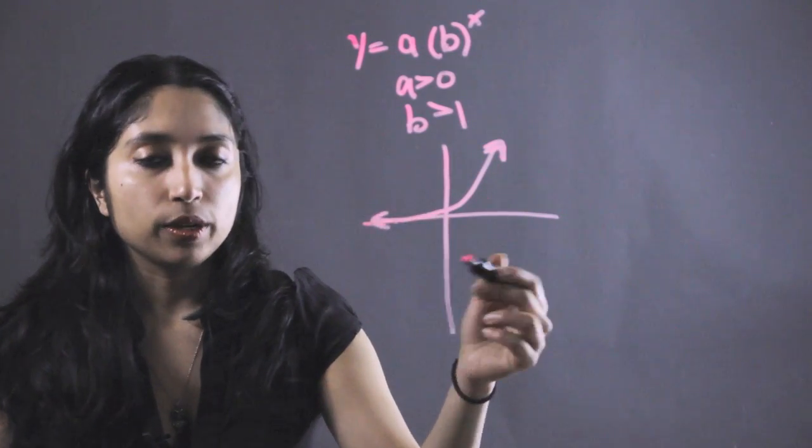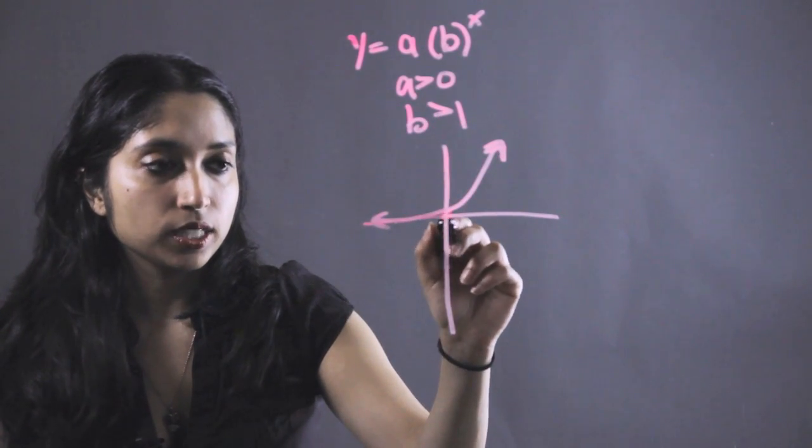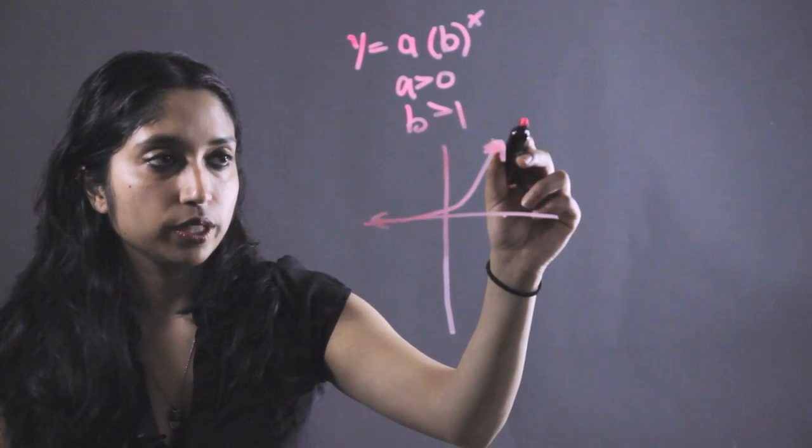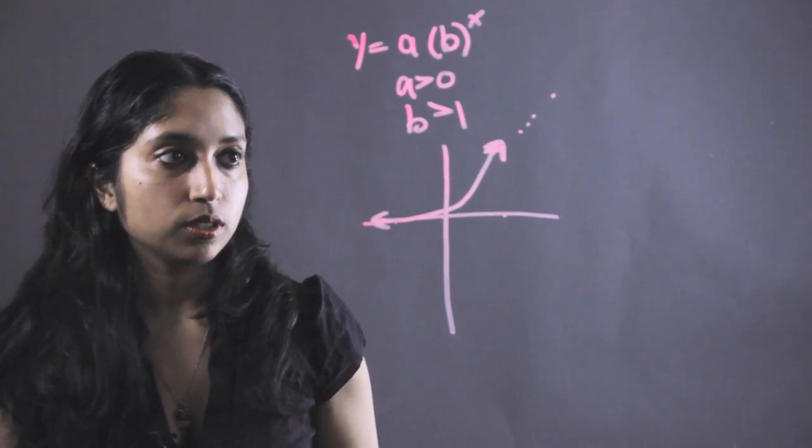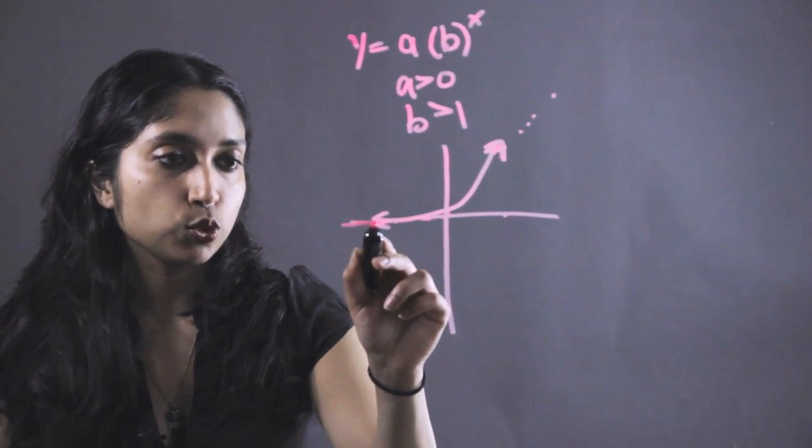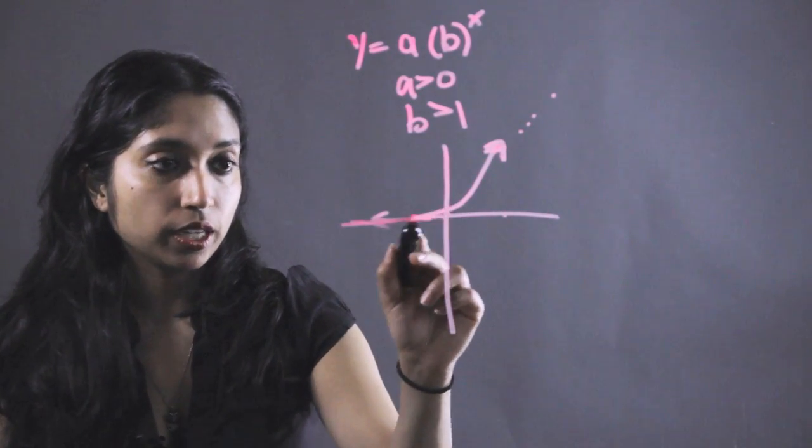So just thinking about it graphically, as X goes to positive infinity, it doesn't really look like this is going to approach any kind of value. It just keeps going up. And as X goes to negative infinity, it looks like it's approaching some sort of value here, right? Because it's kind of leveling off.